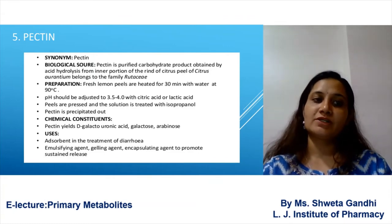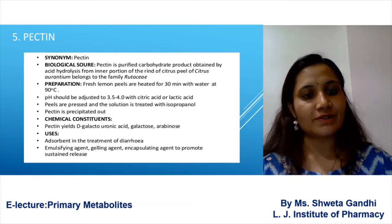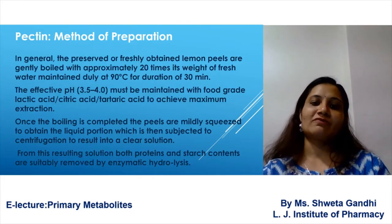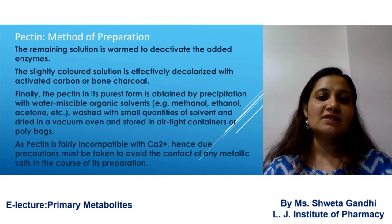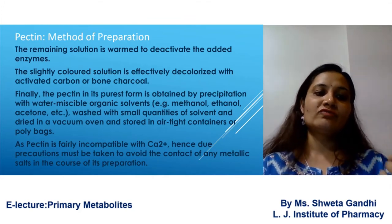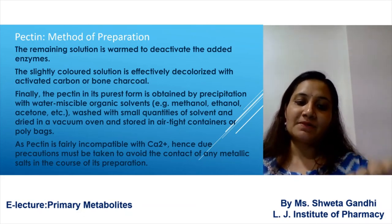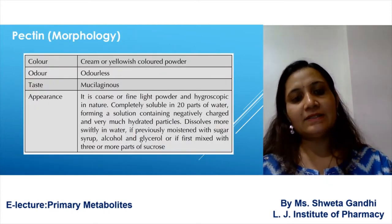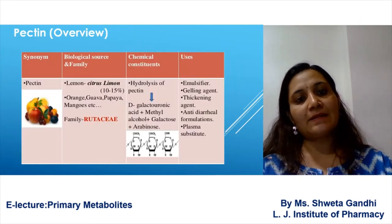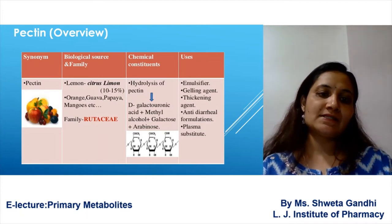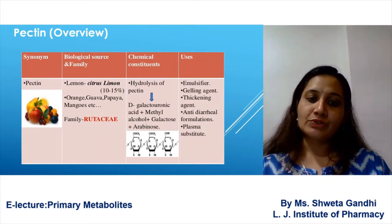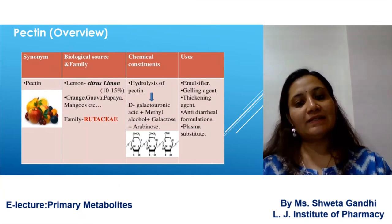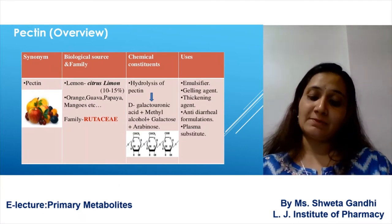Next is pectin. The biological source of pectin is obtained from the root of Citrus aurantium, family Rutaceae. The method of preparation involves warming the solution, filtering, removing impurities, collecting the precipitate, and forming salts. On hydrolysis, pectin yields digalacturonic acid, methyl alcohol, and galactose. Its uses include as a plasma substitute and as an anti-diarrheal agent.